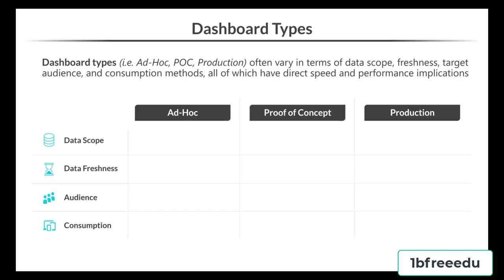Looking at data scope: an ad hoc dashboard will require a broader set of data, while a proof of concept narrows the data to prove out the metrics, visualizations, and more. Production dashboards filter the data down to just the relevant information needed for the use case, which helps optimize performance for a broader audience. Data freshness also varies by type, with ad hoc and production data sources needing either scheduled refreshes or near real-time data, while proof of concepts only need a static data pull or mock data set.